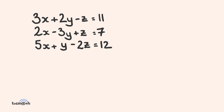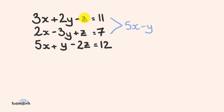The first thing we're going to do is combine two of these equations — equation one and equation two. You can see that by doing this, looking at the z variable, we have negative z here and positive z here, so they're going to cancel each other out, leaving us with an equation with only two variables, x and y. So 3x and 2x gives us 5x, positive 2y and negative 3y gives us negative y, the z's cancel out, and this equals 11 plus 7, which is 18.